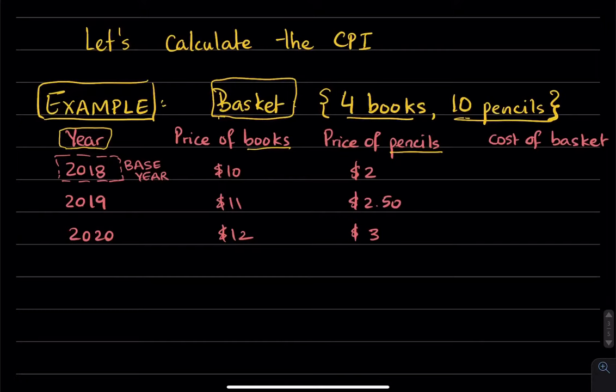In the second column, you have the price of books, which was $10 on average in 2018, which is also given to us as the base year, $11 in 2019, and $12 in 2020. Similarly, we're given in column three, the price of pencils, which is $2, $2.50, and $3, respectively, for those years.